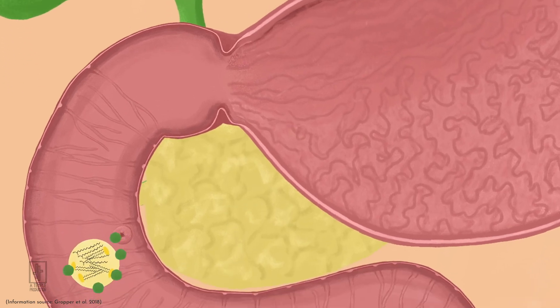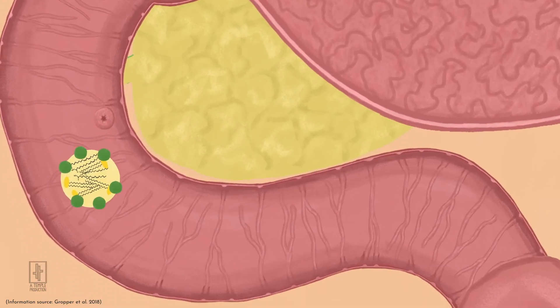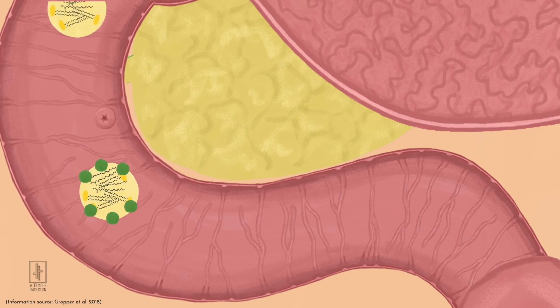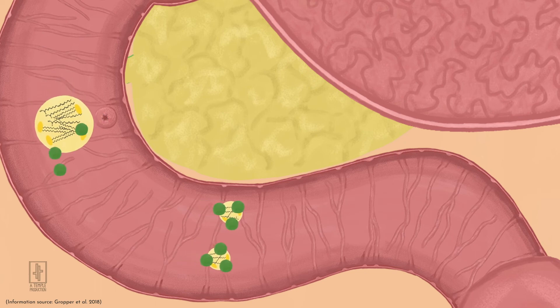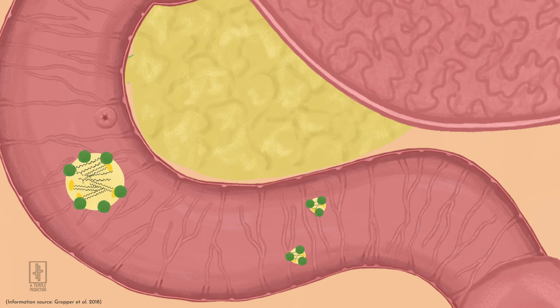These compounds, along with the muscular contractions of the small intestine, further emulsify the fats and break the fat molecules into mostly monoacylglycerols and free fatty acids, finally resulting in smaller fat droplets called micelles.